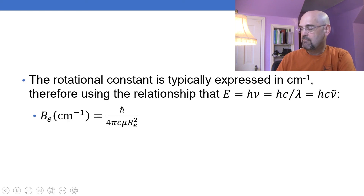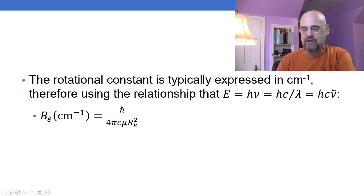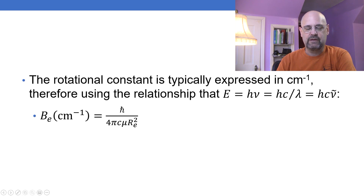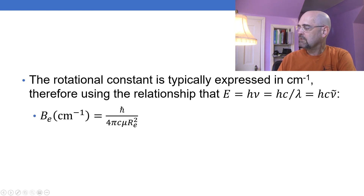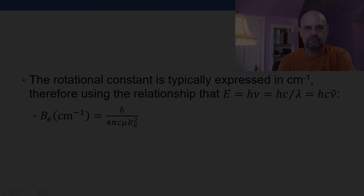My rotational constant is typically expressed in wavenumbers. Recalling that E = hν = hc/λ, and since one over lambda is the wavenumber ν-bar, we can rewrite this. The rotational constant B equals h-bar over four pi times c times mu times r_e squared.